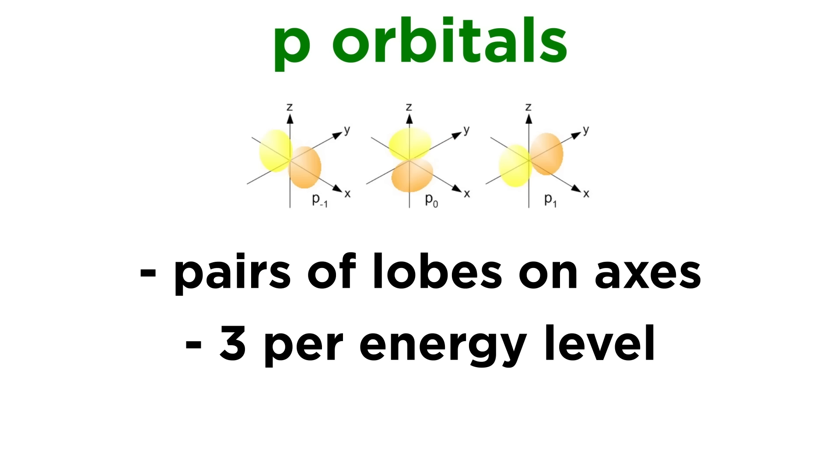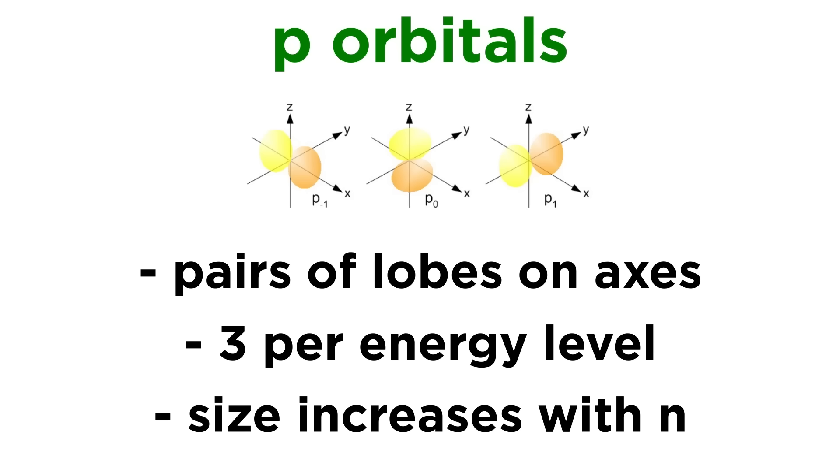The p-orbitals, which are three per energy level starting with n equals two, involve pairs of lobes extending along each of the three axes, x, y, and z. These also increase in size as n increases, though they retain their orientation.